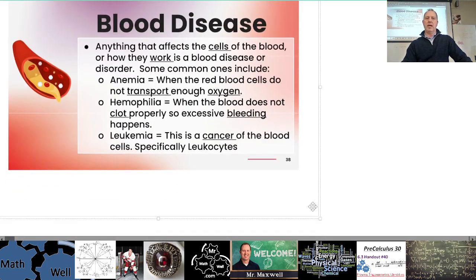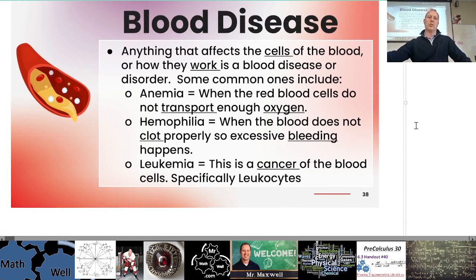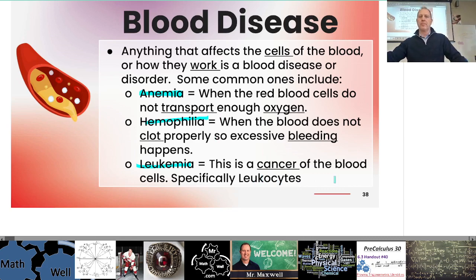Blood diseases: anything that affects the cells of the blood or how they work is a blood disease or disorder. Common ones include anemia — when the red blood cells do not transport enough oxygen; hemophilia — when the blood does not clot properly so excessive bleeding happens; and leukemia — a cancer of the blood cells, specifically the leukocytes.